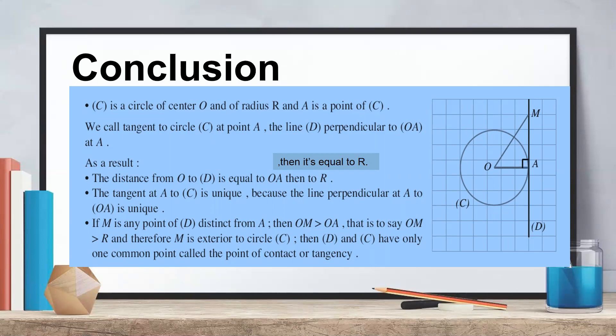The tangent to the circle at point A is unique — meaning from A we can draw one and only one tangent. Additionally, if I take any point on the tangent different from A — either above or below A — and measure the distance from the center O to that point, it will always be greater than the radius, because the shortest distance from O to the tangent is OA, which equals the radius.